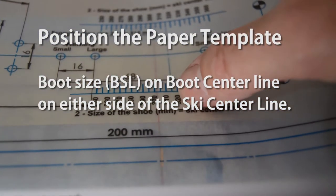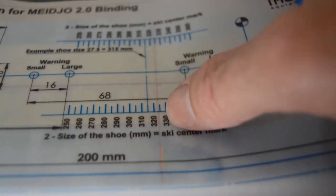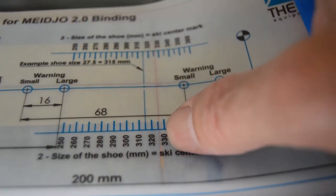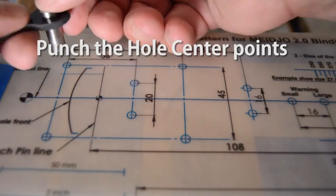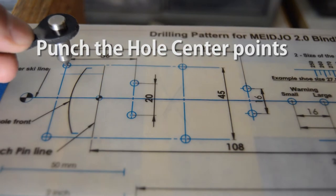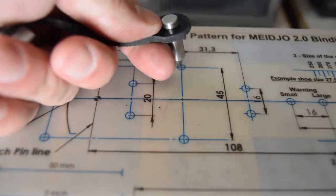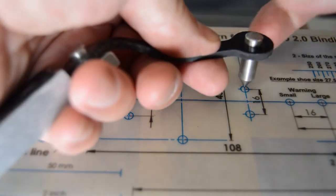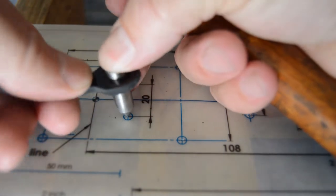Okay, now we can take the Meijo template, line it up with the ski center line and then across the boot center line. You want to put the marks for the boot sole length of your boot whatever that is, and then tape it in place. Make sure it doesn't wiggle, and then center punch the holes for the toe and the shift bump. And then we are ready for the moment of truth.